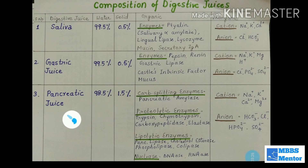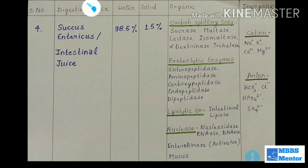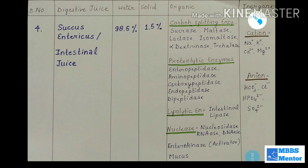Pancreatic juice is secreted by the pancreas — it has many enzymes as listed. Finally, intestinal juice, or succus entericus, is secreted by the small intestine. It has 98.5% water and 1.5% solids, with various enzymes — proteolytic and lipolytic — acting directly on their substrates.